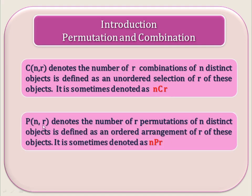Next we see P(n, r). P(n, r) denotes the number of r-permutations of n distinct objects. It is defined as an ordered arrangement of r of these objects. P(n, r) means we have arranged r objects out of n distinct objects. Here it is the ordered arrangement. This is the main difference between selection and arrangement — selection means combination, arrangement means permutation.